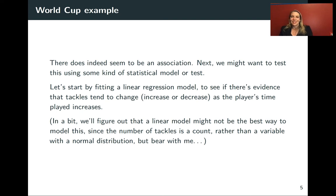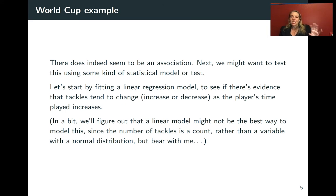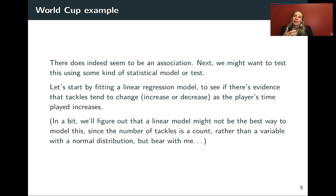We might want to explicitly test this relationship using a model. When we have a linear monotonic change as we move from one variable to another, we can use a regression model. We'll start with a linear regression model to check whether the expected mean number of tackles tends to increase or decrease as player time increases. In a little bit, we'll talk about why a linear model might not be the best choice, and we'll look at diagnostics to see where something else might have worked better.